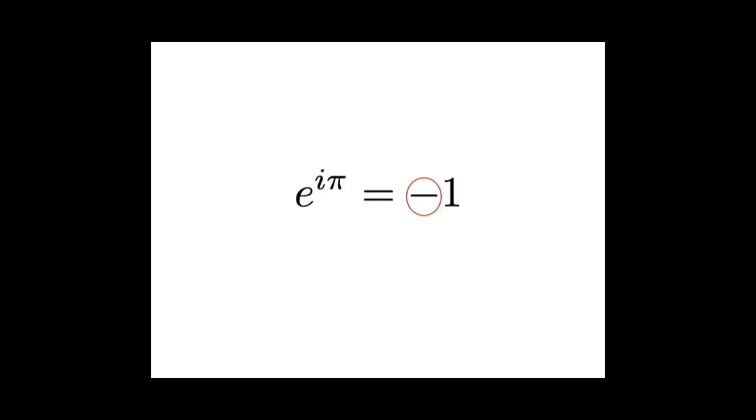In fact, this is so ugly that it's almost always immediately rearranged to form e to the i pi plus 1 equals 0. And at this point, people like to make some sort of mystical statement about how this relates to the five most important numbers in mathematics, 0, 1, i, e, and pi.